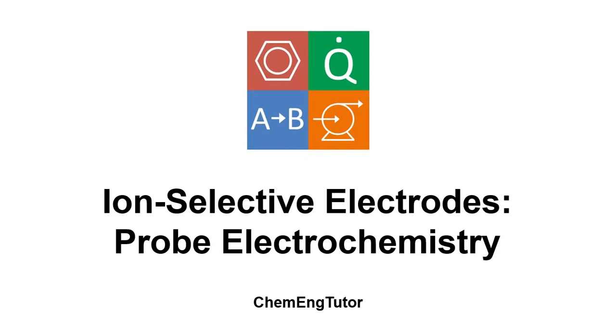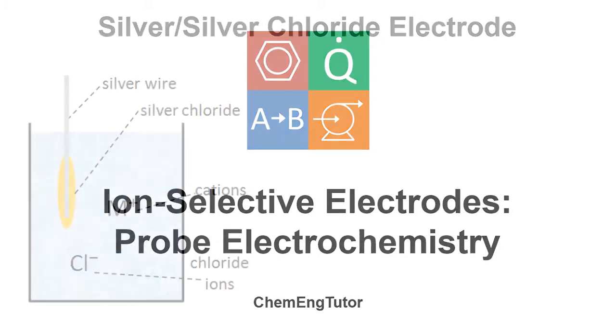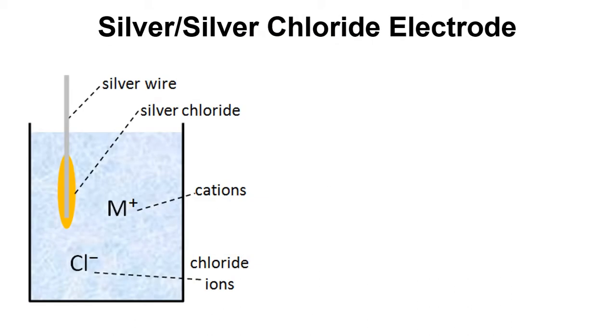In this video we're going to take a look at the electrochemistry of an ion-selective electrode probe. To start with we're just going to take a look at the silver silver chloride electrode.